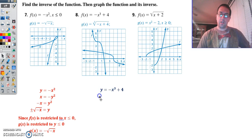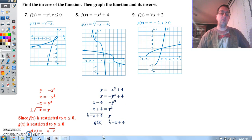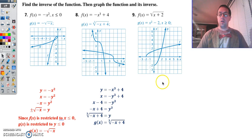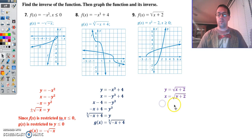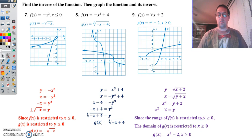Number 8: change f of x to a y, change positions with x and y, get y by itself. Subtract 4, divide by negative 1, and then cube root both sides. Our original has a domain of all real numbers and a range of all real numbers, so we don't have to worry about domain restrictions. Number 9: change f of x to a y, change positions with x and y, get y by itself — square both sides, then subtract 2. This would be a whole parabola, but I only have half of it. So I restrict this to where x is greater than or equal to 0, and that gives us the correct reflection.